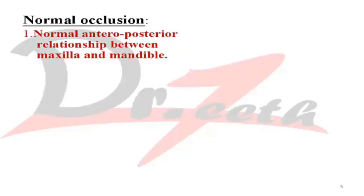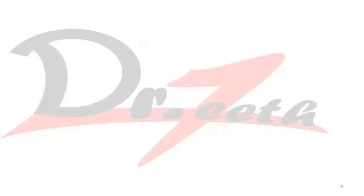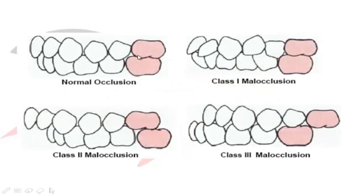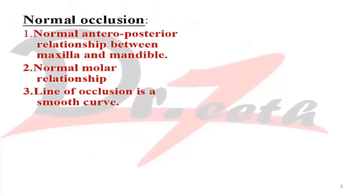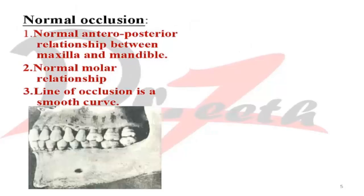Angle described three characters of normal occlusion. First, there will be a normal anterior-posterior relationship between the maxilla and the mandible. In a normal individual, the maxilla is slightly forwardly placed compared to the mandible. Second, there will be a normal molar relationship: the mesiobuccal cusp of the upper first permanent molar occludes in the buccal groove of the mandibular first permanent molar. This is what we call Class 1 molar relationship. Third, the line of occlusion is a smooth curve.